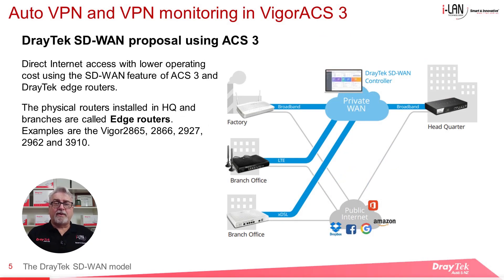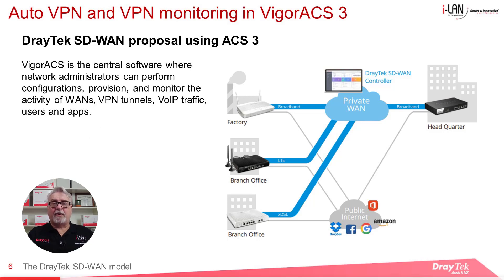The Draytek SD-WAN solution uses VigorACS3 together with Draytek edge routers installed at the head office and branches — including the Vigor2865, 2866, 2927, 2962, and 3910 models, with more potentially added in future. These edge routers receive SD-WAN configurations from VigorACS3, perform edge computing according to SD-WAN policies, and upload data to the VigorACS3 server for monitoring. In this webinar we'll be looking more closely at VPN and SD-WAN and the extra monitoring options it allows.